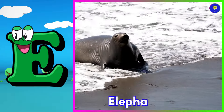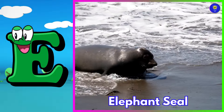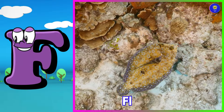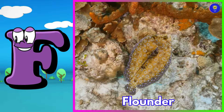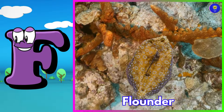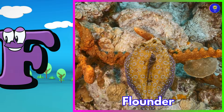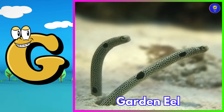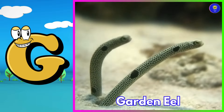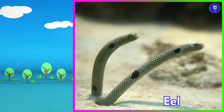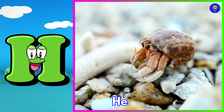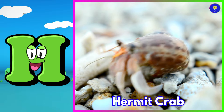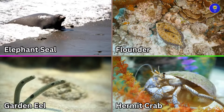E is for elephant seal. Eh, elephant seal. F is for flounder. Fuh, flounder. G is for garden eel. Guh, garden eel. H is for hermit crab. Ha, hermit crab.